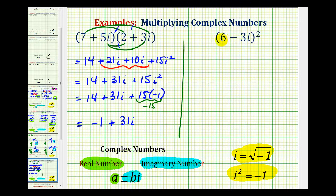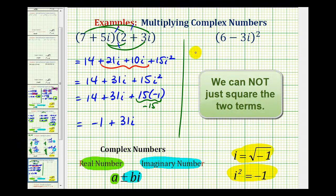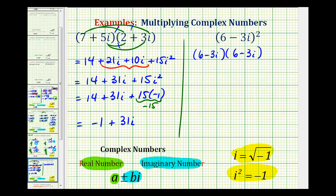Next we have six minus three i squared, and there are no shortcuts here. We're going to have six minus three i times six minus three i. And again, we're going to have four products.